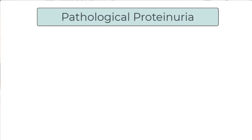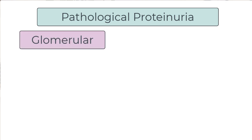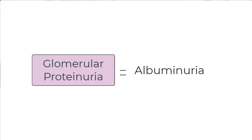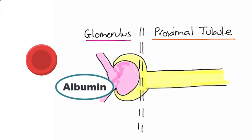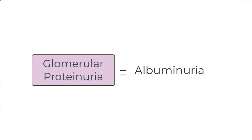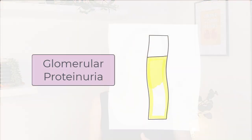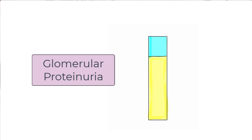When it comes to pathological conditions causing proteinuria, there are two broad clinical scenarios: glomerular proteinuria and tubular proteinuria. Glomerular proteinuria is basically albuminuria. If you have a healthy filtration barrier, albumin should not be in the urine and neither should red cells. So if you find albumin or red cells in the urine, you have to think — is there something wrong with the glomerulus?